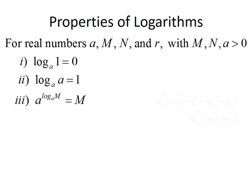Third, A raised to the log base A of M is equal to M. So if we have an exponential raised to a logarithm that has the same base as the exponential, the exponential and logarithm cancel each other out, leaving just what was inside the logarithm. Fourth, log base A of A to the R is equal to R. Similarly, if we take a logarithm base A of an exponential with the same base, the logarithm and exponential cancel each other out, leaving us with the exponent R.